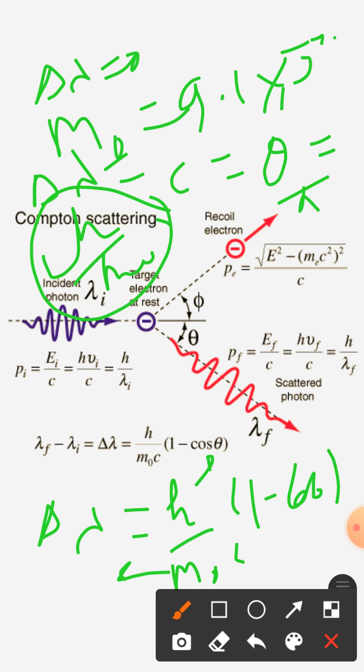So this is called a quantum mechanical effect, and is known, in respect to scientist physicist Compton, as the Compton scattering or Compton effect. Thank you very much.